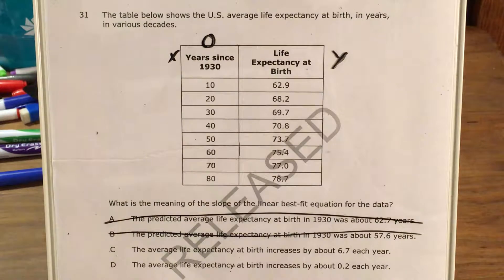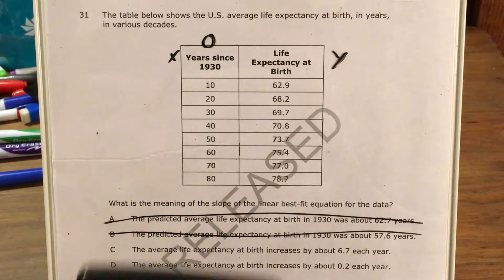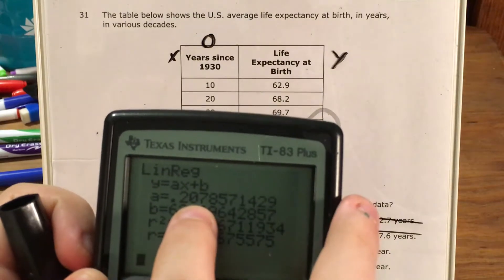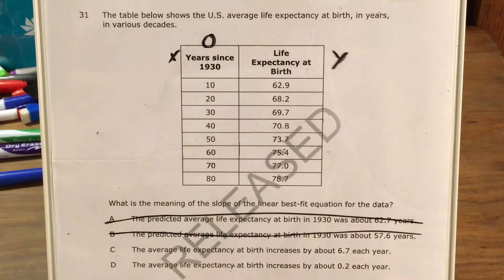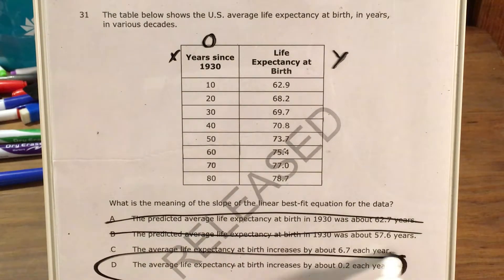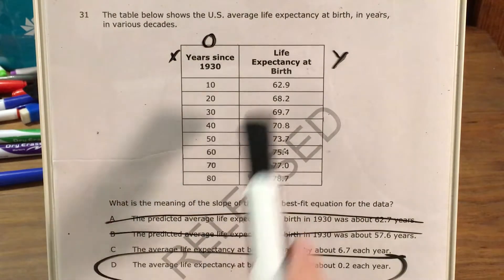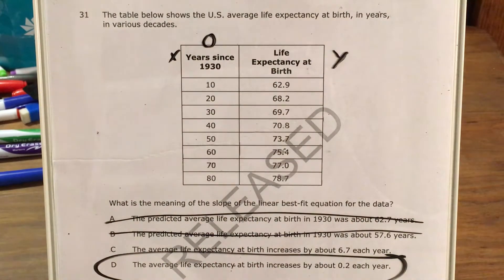Choice C says the average life expectancy at birth increases by about 6.7 each year — that doesn't match the 0.2 that I got. But choice D, the average life expectancy increases by about 0.2 each year, does. So my answer is D. I got that by plugging all this data into my calculator, doing the linear regression command, and interpreting what I saw in terms of what I already knew about slope.